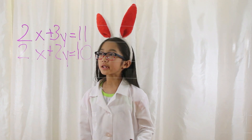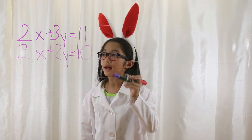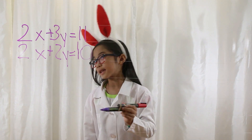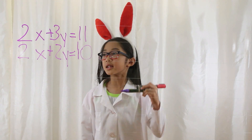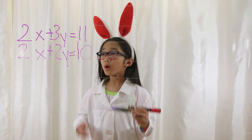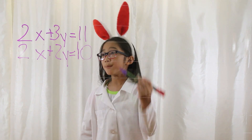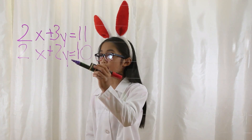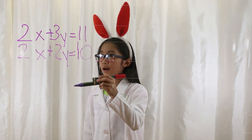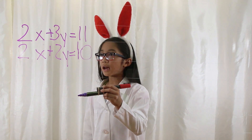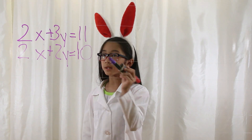Let's say your first equation is 2x plus 3y equals 11, and your second equation is 2x plus 2y equals 10. What do you notice about the two equations? Well, in both equations there's a 2x in the beginning, so therefore that cancels out. All you have left is 3y equals 11 and 2y equals 10.